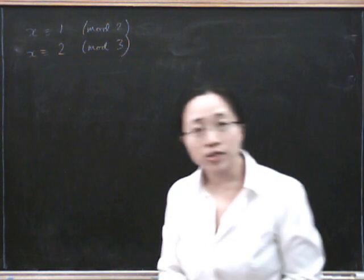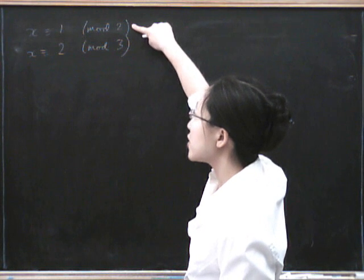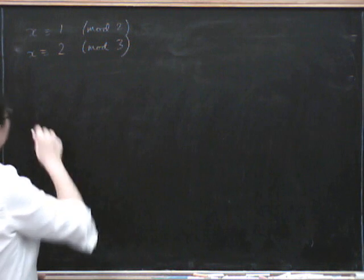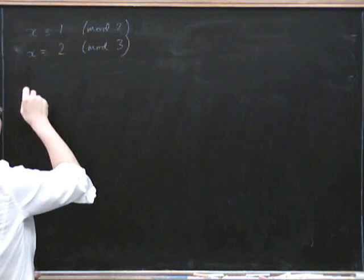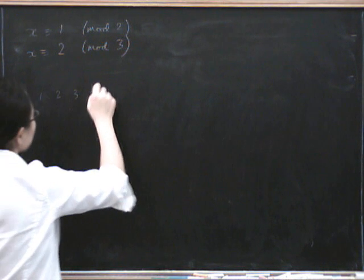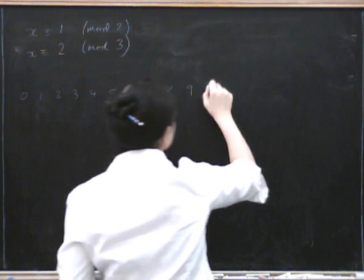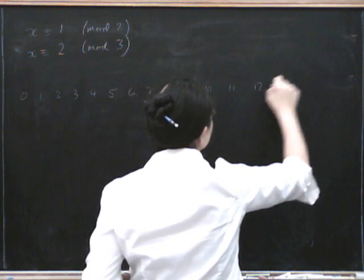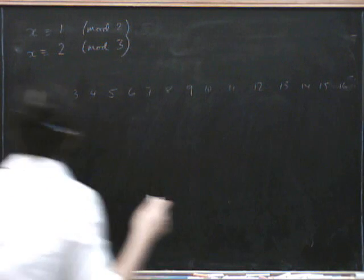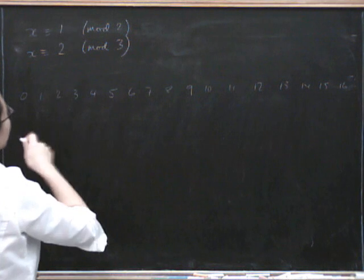One way you could do this is you could start by thinking of all the numbers that satisfy the first one, and seeing if there are any that satisfy the second one. I could write out all my numbers: 0, 1, 2, 3, 4, 5, 6, 7, 8, 9, 10, 11, 12, 13, 14, 15, 16, and so on. Now let me mark above them all the ones that satisfy the first equation.